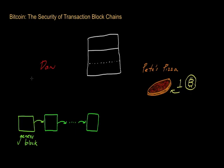So let's suppose that there is someone named Dan, and Dan wants to order a pizza — maybe a cheese pizza from Pete's Pizza Shop. Let's say that Pete's Pizza Shop accepts Bitcoins as payment and that it costs one Bitcoin for a pizza pie.